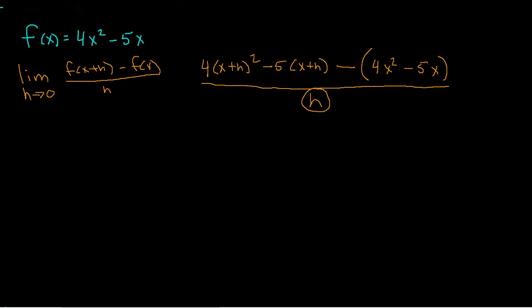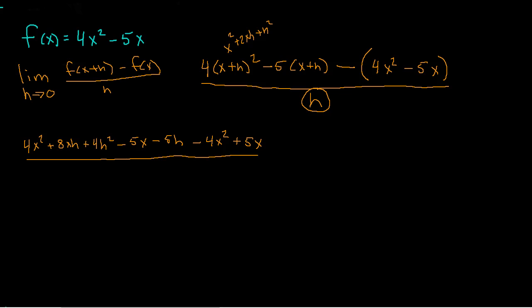I've got a lot of algebra to do. First, x plus h squared is x squared plus 2xh plus h squared. Distributing the 4 gives 4x squared plus 8xh plus 4h squared. Distributing negative 5 gives negative 5x, negative 5h. Then distributing the negative out back gives negative 4x squared, positive 5x. All divided by h.